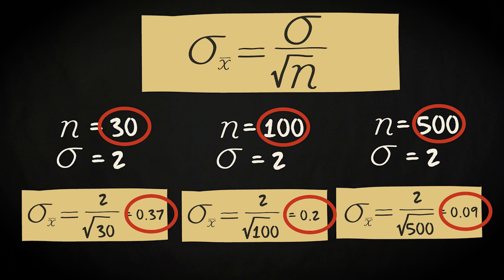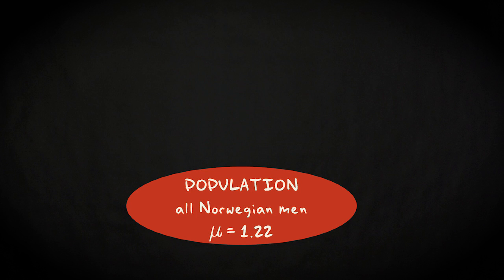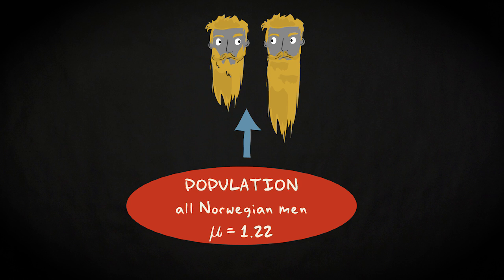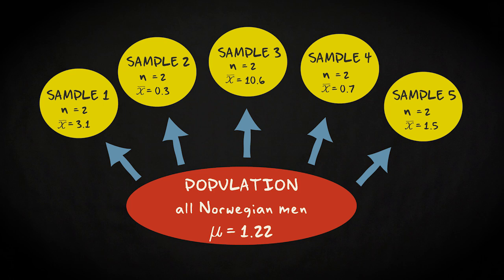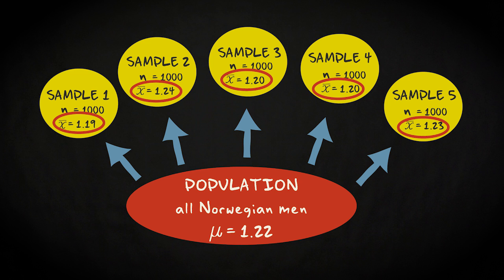This also makes sense intuitively. If the mean beard length in the population of Norwegian men is 1.22 mm and you draw a sample of only 2 respondents, it wouldn't be strange if you find a mean that is much higher. If one of your 2 respondents has a long beard, your mean will be pretty high — a mean of 5 or even 10 mm will not be exceptional. If you draw a sample of 1,000 subjects, it will be very unlikely that the mean is 5 or 10 mm, since the long-bearded man will be counterbalanced by men with no facial hair at all. If you draw 5 samples, the sample means will all be very close to the population mean of 1.22 mm.